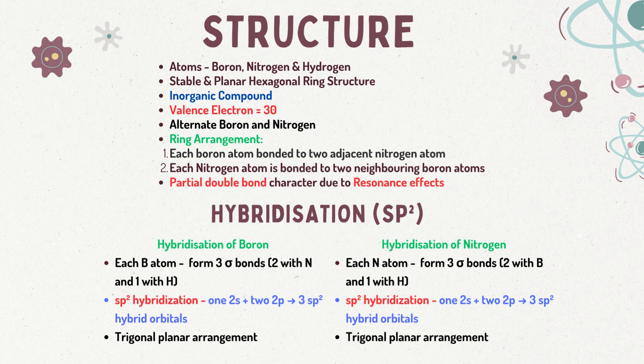The hybridization of borazine's atoms plays a crucial role in determining its unique structure and properties. Each boron atom in borazine forms three sigma bonds — two with adjacent nitrogen atoms and one with a hydrogen atom. Similarly, each nitrogen atom in borazine forms three sigma bonds — two with adjacent boron atoms and one with a hydrogen atom.